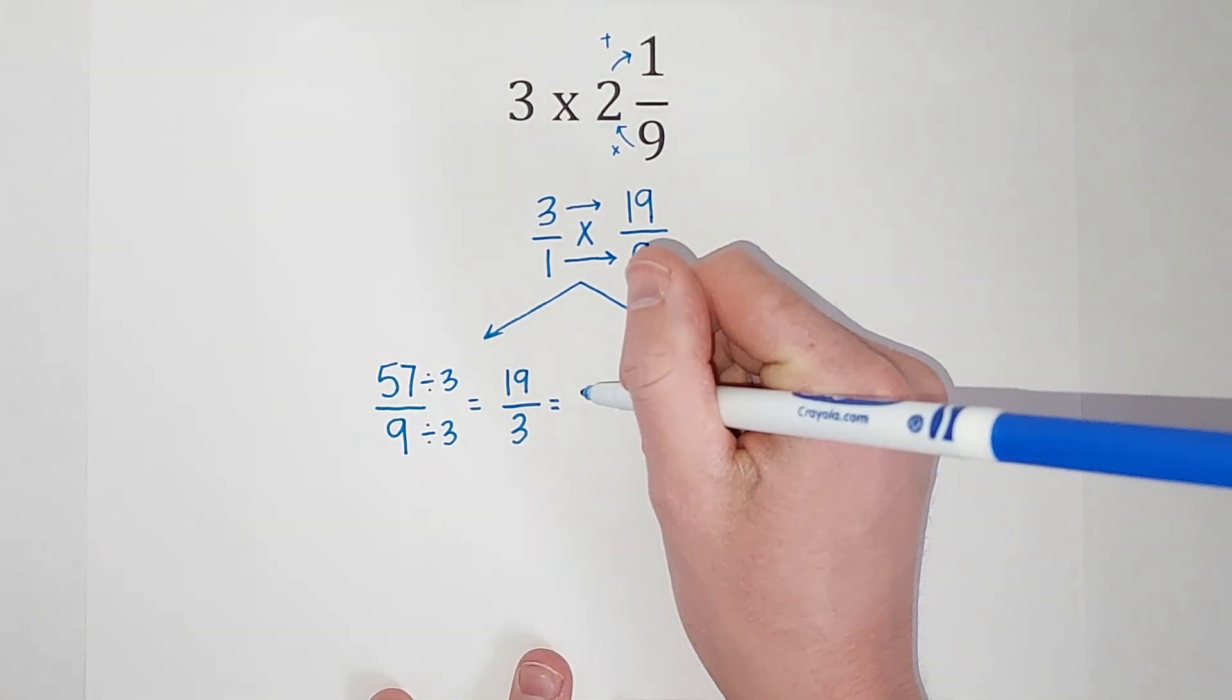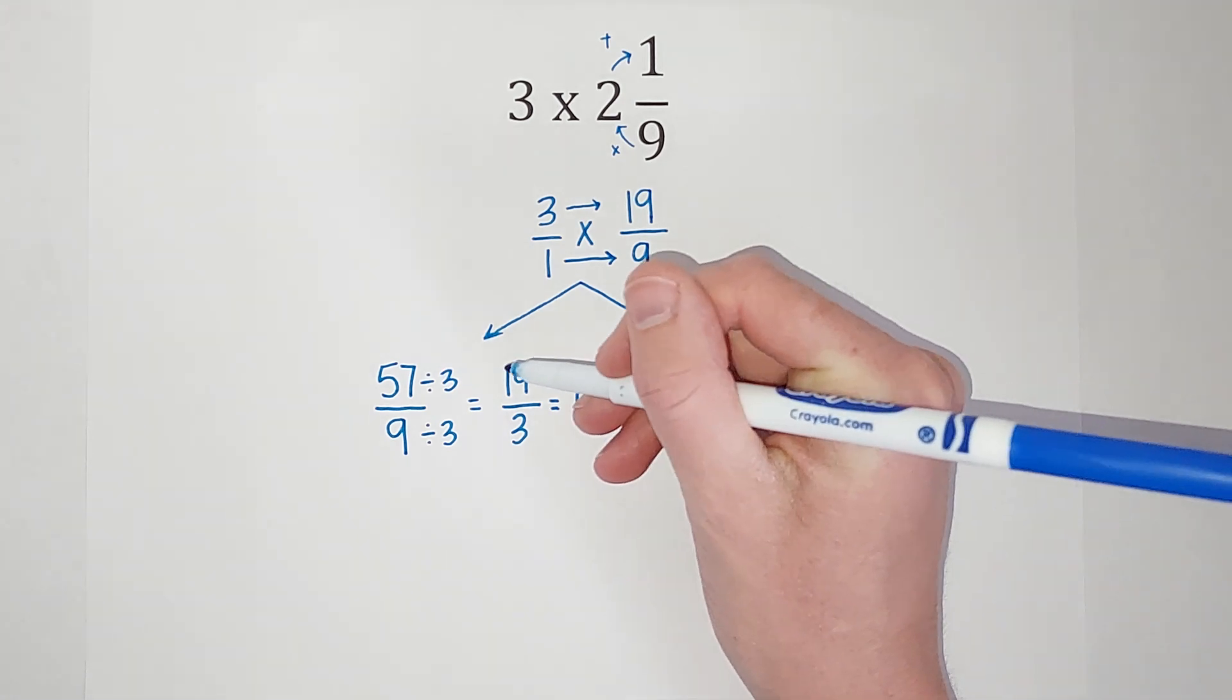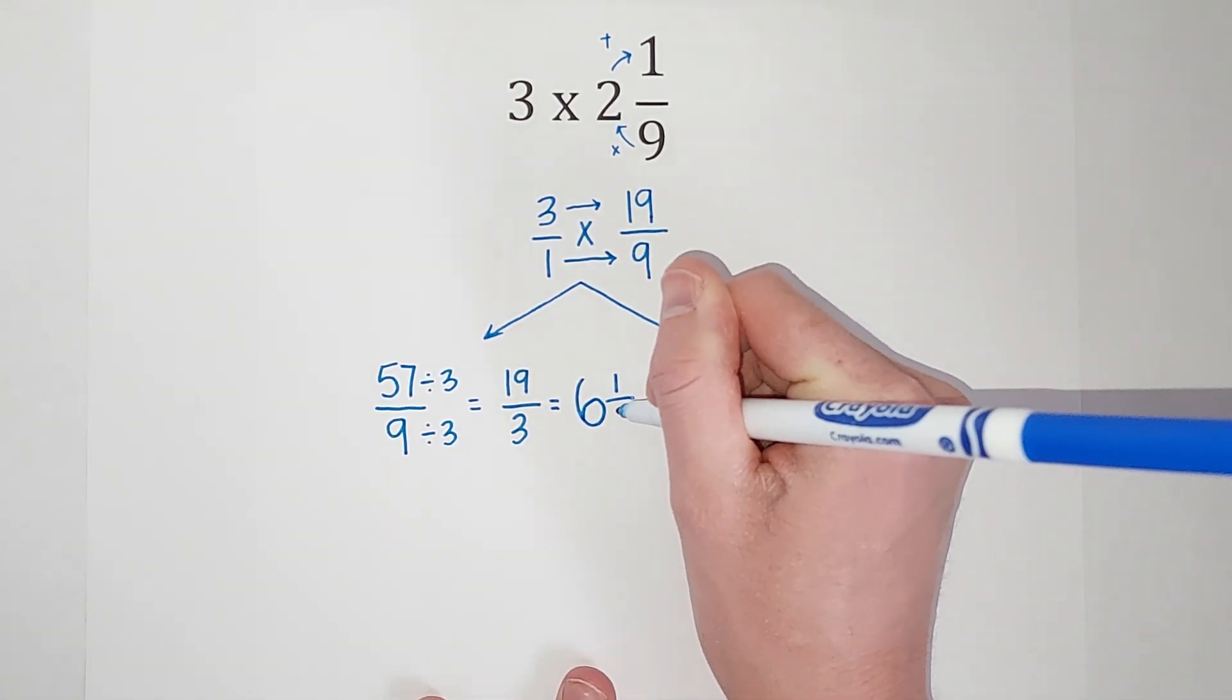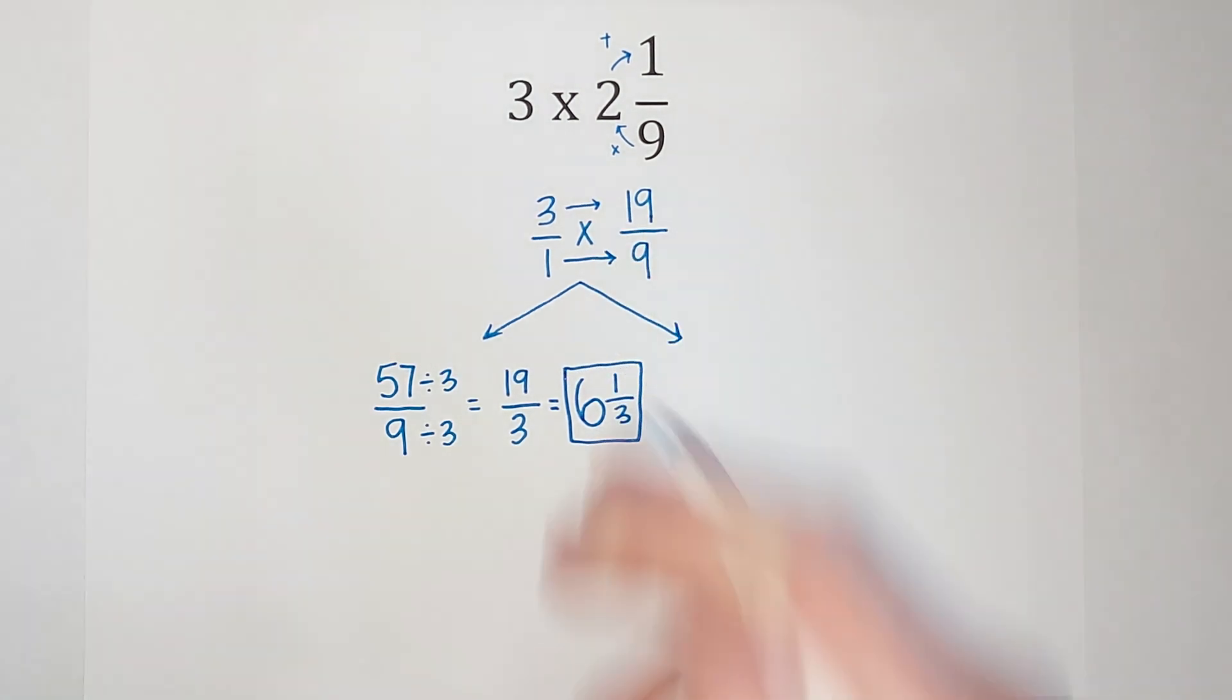Well, it goes 6 times, which 3 times 6 gives me 18. So there's 1 left over, right? And we are still in thirds. So there's one way.